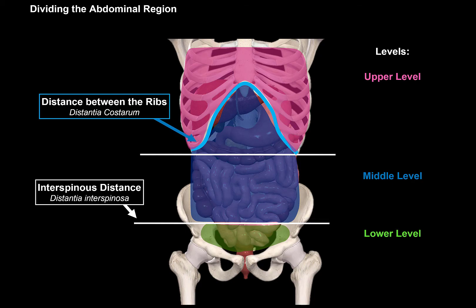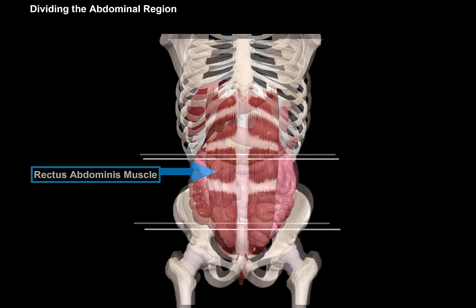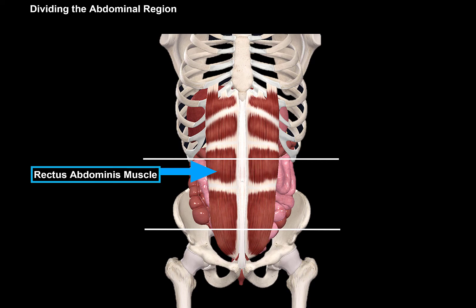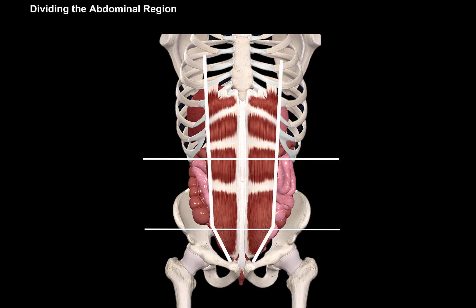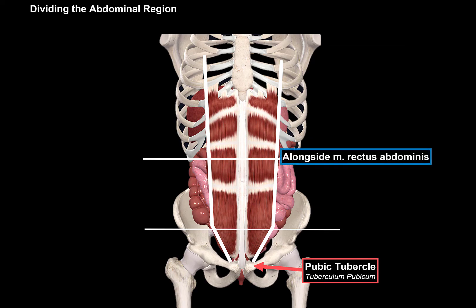Now we need to add the vertical lines, and we add them using the rectus abdominis muscle, as you see here. The vertical lines run along the musculus rectus abdominis — it starts down at the pubic tubercle, goes along the rectus abdominis, and then reaches approximately the middle point of the clavicle up here.